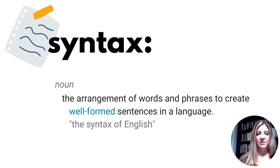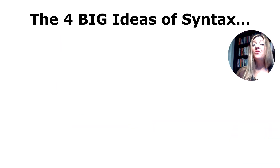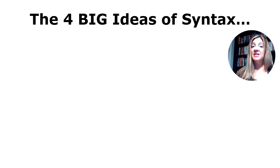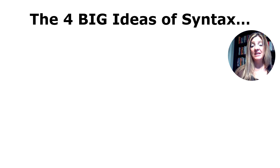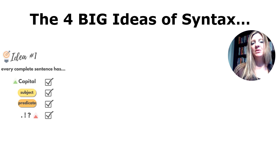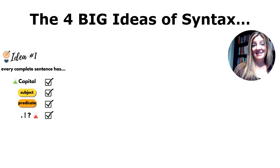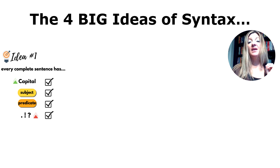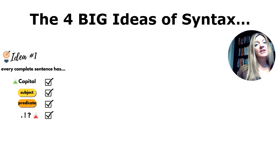Here are the four big ideas of syntax that we're going to break down. I've broken these down for my students at different varying lengths, and I'll explain how I know when to move on. The first big idea: every complete sentence needs a capital, a subject, a predicate, and an end mark. The capital letter is a visual indicator that a new sentence is starting. An end mark is a visual indicator that the sentence is ending. A sentence that doesn't have a subject and a predicate is not a complete thought.